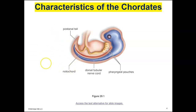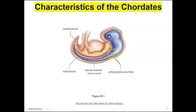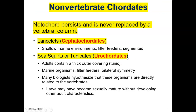Humans do not have tails. The notochord is seen here in red. The dorsal tubular nerve cord is in blue, attached to the head region. And then you can see the pharyngeal pouches here. Those are the four characteristics — make sure you know that all chordates have those four characteristics.